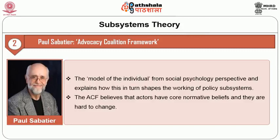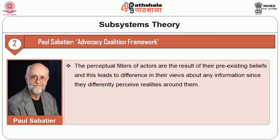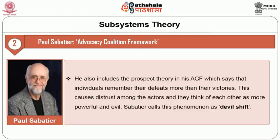Sabatier elaborates on the model of the individual from a social psychology perspective and explains how this in turn shapes the working of policy subsystems. The advocacy coalition framework believes that actors have core normative beliefs on the basis of which they coalesce around an issue, and these are hard to change. The ACF model of the individual is based on the concept of bounded rationality, and it assumes that individuals have limited abilities to process stimuli and therefore rely on beliefs as the principal heuristic to simplify, filter, and sometimes distort stimuli. The perceptual filters of actors are the result of their pre-existing beliefs, and this leads to difference in their views about any information since they differently perceive realities around them. This difference is the basic cause of conflict and competition between different coalitions. He also includes prospect theory in his advocacy coalition framework, which says that individuals remember their defeats more than their victories. This causes distrust among the actors, and they think of each other as more powerful and evil. Sabatier calls this phenomenon the devil shift.